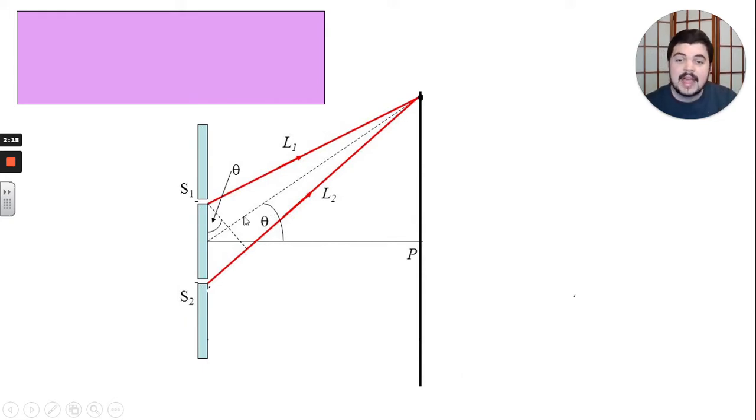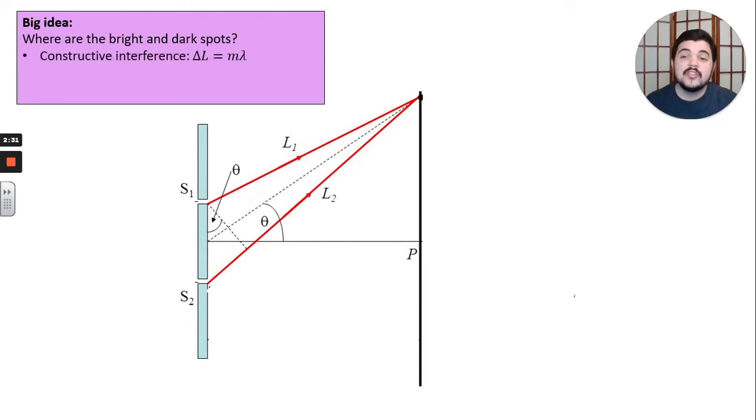And we're going to imagine ourselves scanning theta from point P all the way up the screen and then all the way back down. So the big idea, where are the bright spots and where are the dark spots? Constructive interference, our conditions for that are when the difference in the path length between two waves is a whole integer multiple of the wavelength, then you have constructive interference.